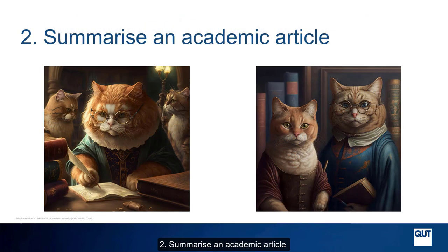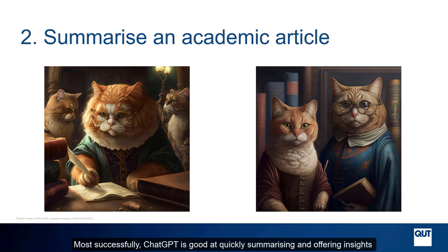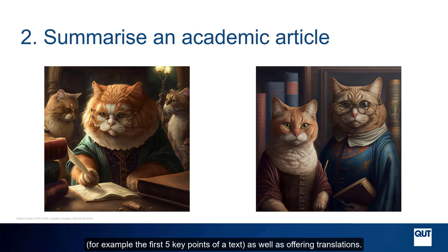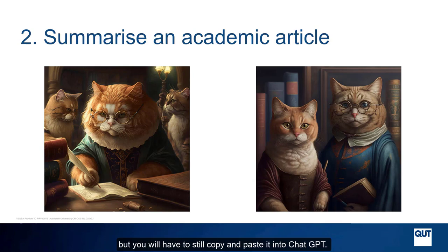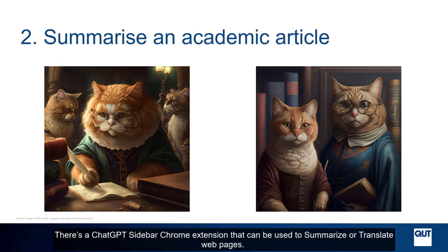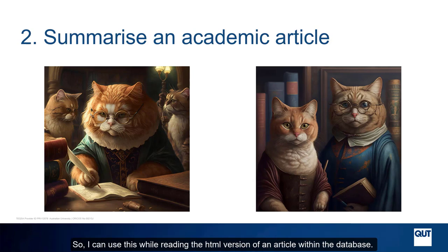2. Summarise an academic article. Most successfully, ChatGPT is good at quickly summarising and offering insights from many existing research papers and academic articles — for example, the first five key points of a text, as well as offering translations. If available online, it should be within the existing dataset, but you will still have to copy and paste it into ChatGPT. There's a ChatGPT sidebar Chrome extension that can be used to summarise or translate webpages, so you can use this while reading the HTML version of an article within the database.